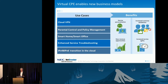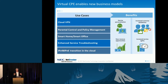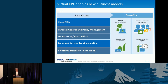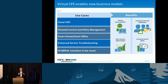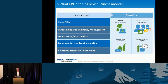One of those use cases is cloud VPN. We actually just had a press release with Telefonica on cloud VPN. It is a very promising use case. What it enables a business customer to do is log in through a self-service portal and change service parameters in real-time connectivity. You can bring up connectivity on a particular site, a remote site, or a branch office. You can change the attributes of that connectivity and change the SLAs.